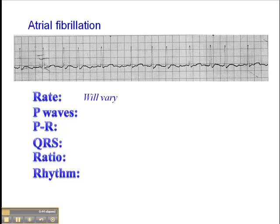But if the patient's had atrial fibrillation for a while and has been diagnosed and they're being treated, they're probably receiving medication — perhaps digoxin — that will control the heart rate. If the heart rate's below 100, they call that controlled atrial fib. So the heart rate varies, and P waves are absent.